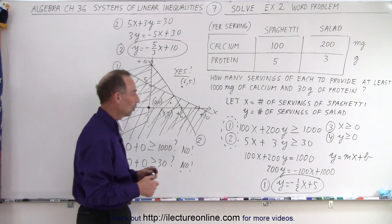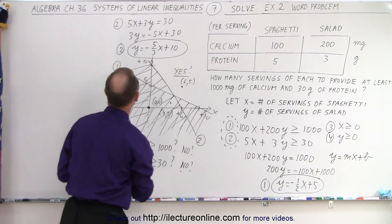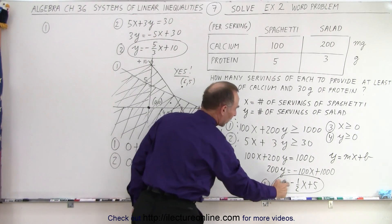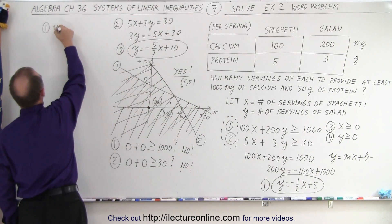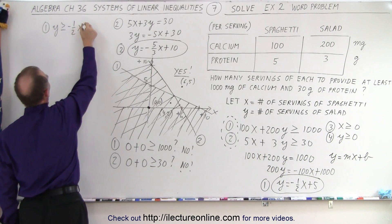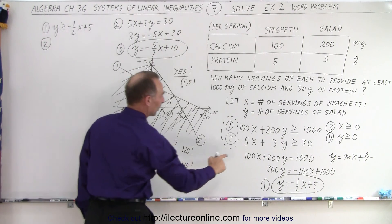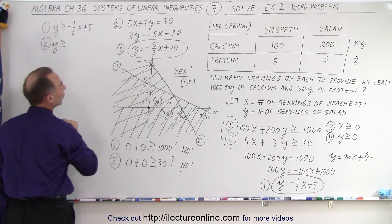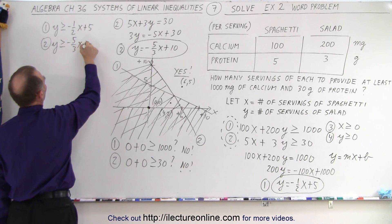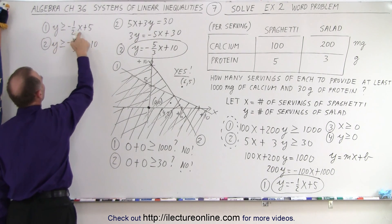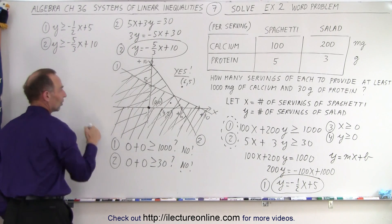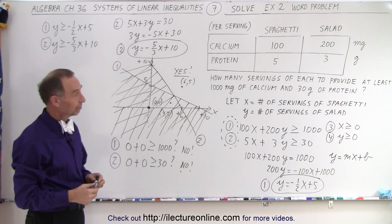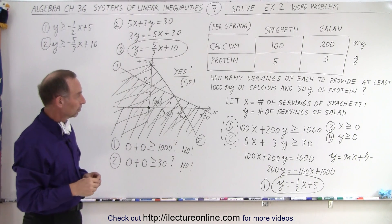To summarize the inequalities in slope-intercept form: inequality number one gives y must be greater than or equal to negative one-half x plus 5, and inequality number two gives y must be greater than or equal to negative five-thirds x plus 10. You're looking for values of y greater than those functions of x, meaning the region above or to the right of both lines.